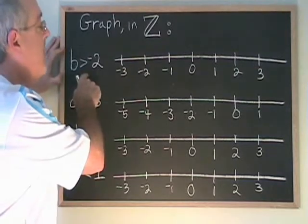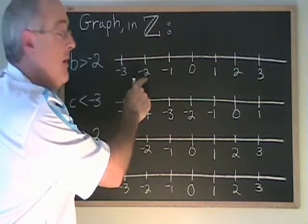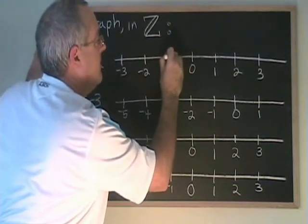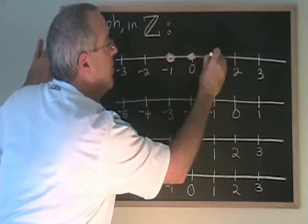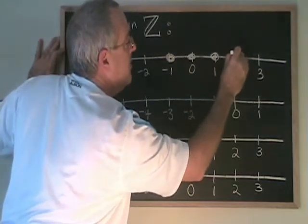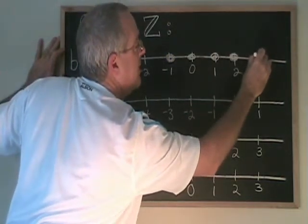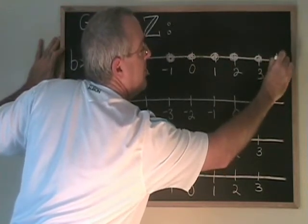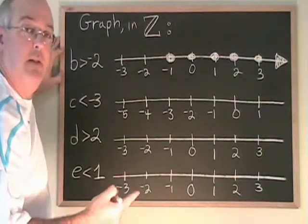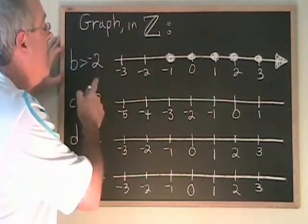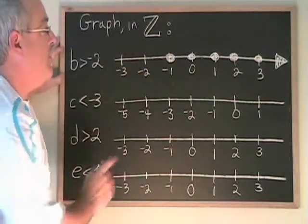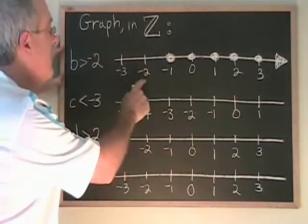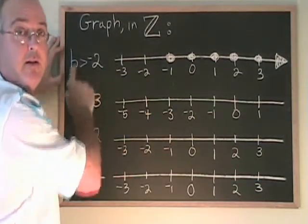B greater than negative 2: all of the integers that are greater than negative 2 are over here. They include negative 1, 0, 1, 2, 3, and on and on in the positive direction. It's very similar to the answer you would get if it was graphed in natural numbers, except negative 1 has to be included. Negative 2 cannot be part of the answer because it is not greater than itself.